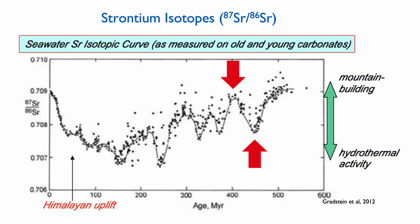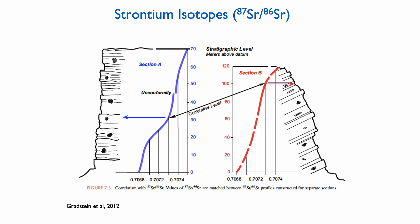We can use these peaks and troughs to determine different times on that curve. For instance, the uplift of the Himalayas starting at 60 million years generated a very strong shift of strontium isotope towards much heavier values today. In practical terms, you would look at the absolute value of strontium in one section and correlate that value to the absolute value in a second section — it's really the absolute value that allows you to do the correlation.